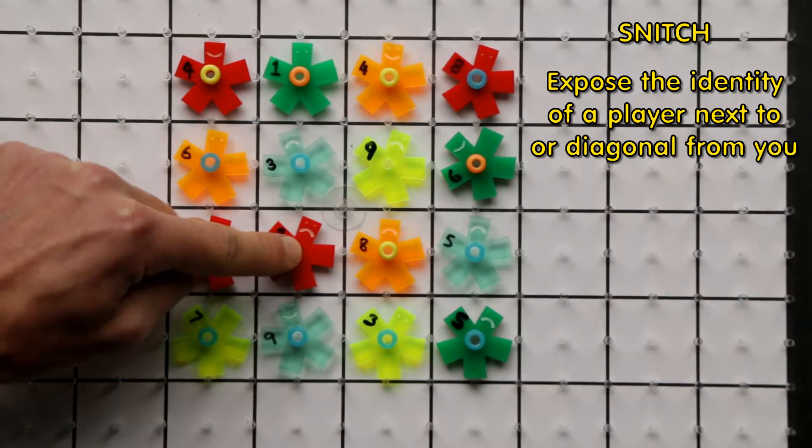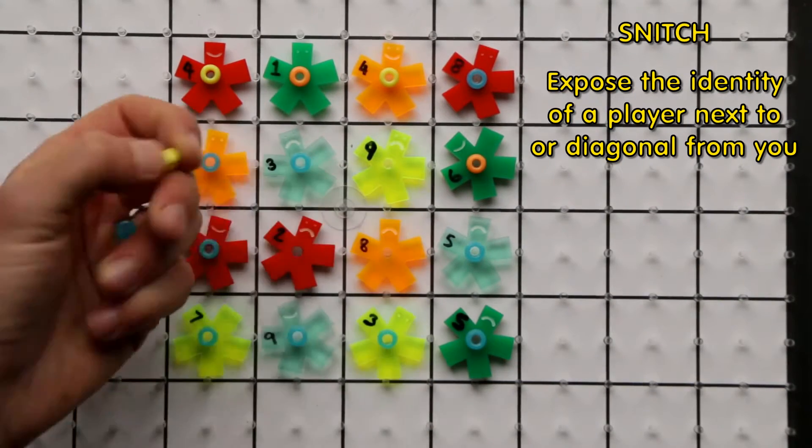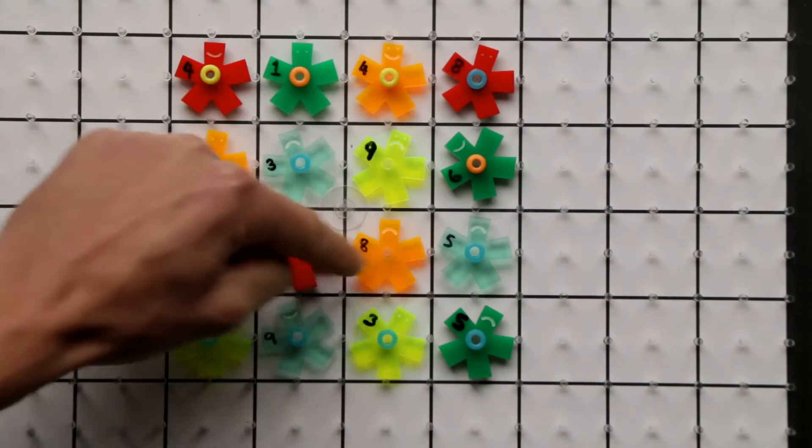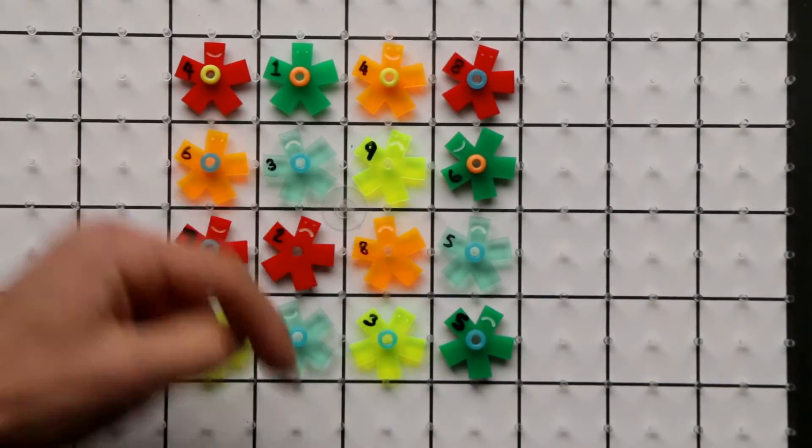they as a reward would get half of your gems rounded down to the nearest number. So 19 halved is nine and a half. So nine, they would get a nine gem reward for exposing you because these are the gems that you had in your possession. You would be knocked out of the game. You'd just sit there. You'd be dead.